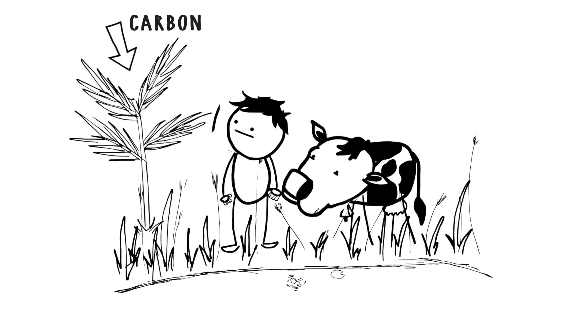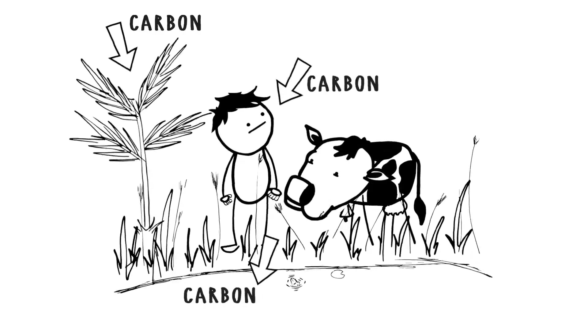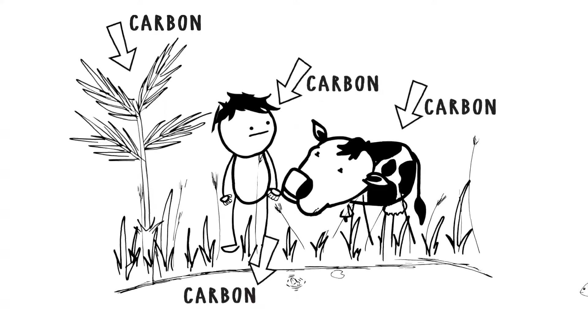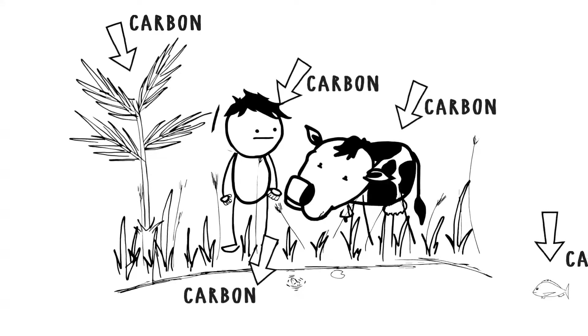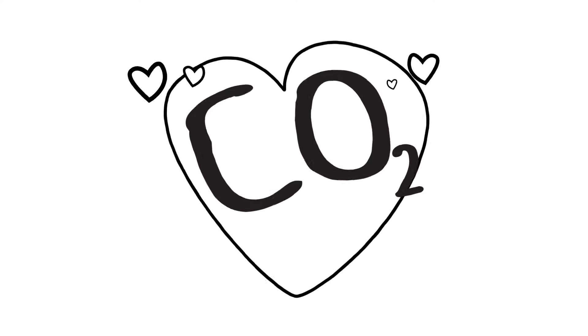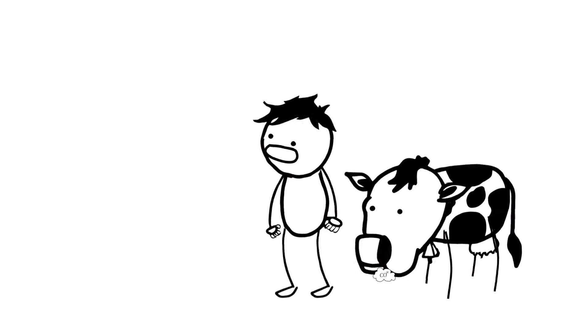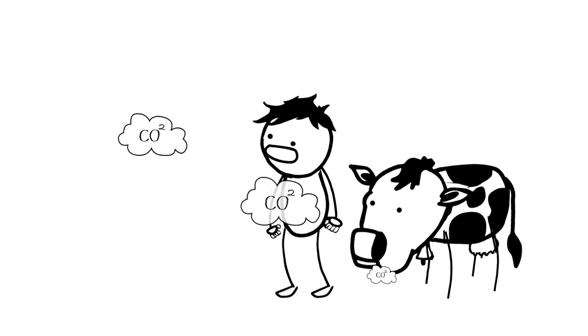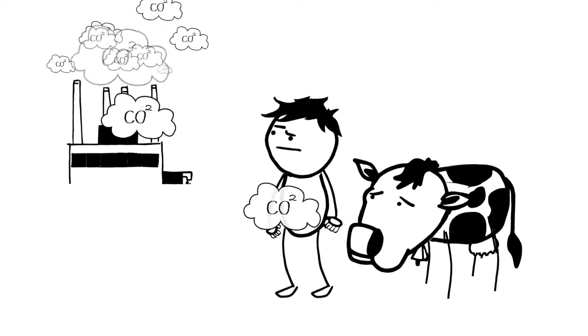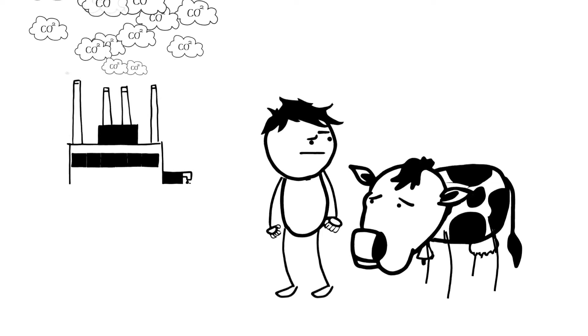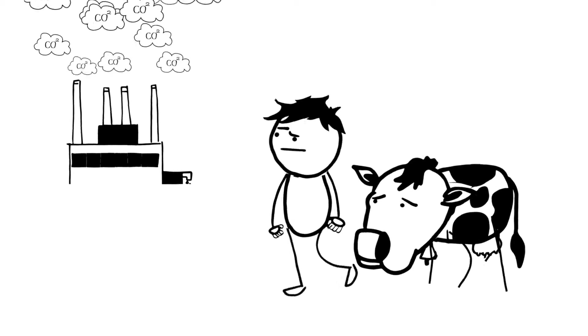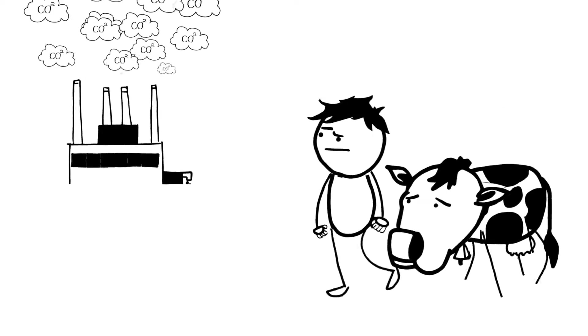All living things are made up of carbon. It's also part of the ocean, air, and soil. Carbon dioxide is a gas created when carbon and oxygen combine. This combining occurs when humans or animals breathe, or when we burn fossil fuels extracted from the earth.